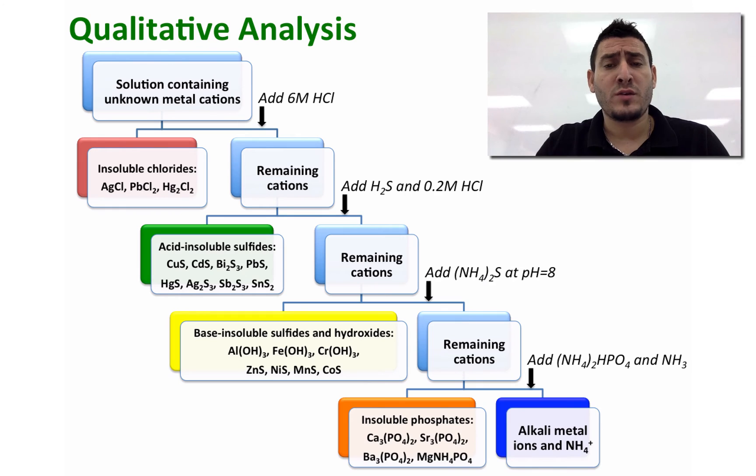In a later stage, I can add ammonium hydrogen phosphate and ammonia solutions, and then I will precipitate calcium, strontium, barium, magnesium, and the alkali metal ions will remain in solution. This method will help me identify the ions I have in solution or separate the ions that I have in solution.